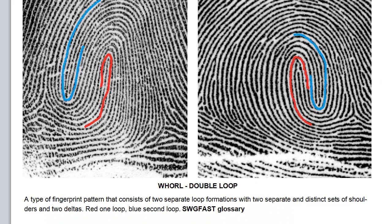Let's look at the double loop whirl — I have it fairly clearly marked here with red and blue. A double loop whirl is a type of fingerprint pattern that consists of two separate loop formations with two separate and distinct sets of shoulders and two deltas. These are making complete loops and they are not connecting with the independent ones next to them. This is the shoulder right here, and this is the looping ridge. Because this line is coming down and not connected to the other one, this also is a double loop whirl.